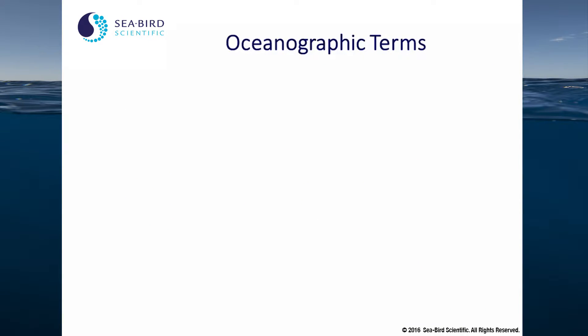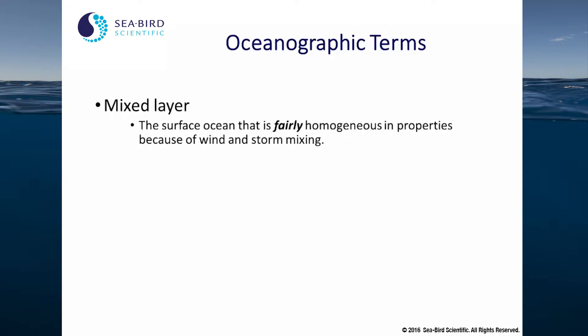Here are some common oceanographic terms. The mixed layer is the surface of the ocean that is fairly homogeneous in properties because of wind and storm mixing. There are multiple definitions of the mixed layer with intrinsic temporal scaling. For example, we would look at a difference in sigma-t or density to define the mixed layer. That difference in density would be expected to be larger if we're comparing over the seasonal or annual timescale than a daily or weekly.